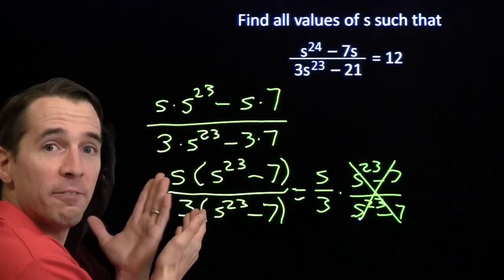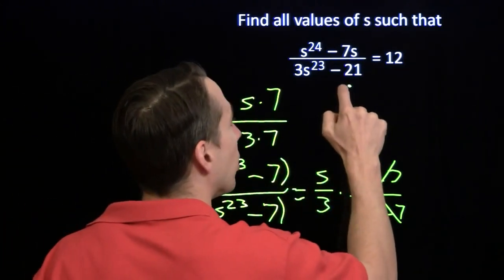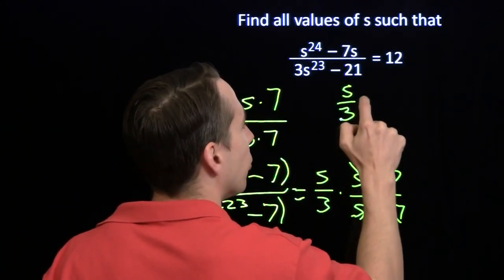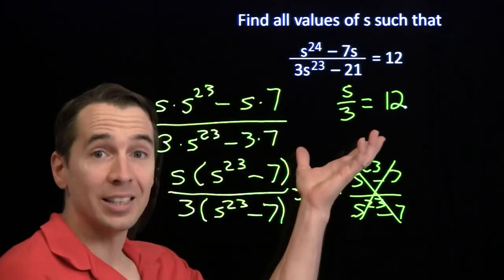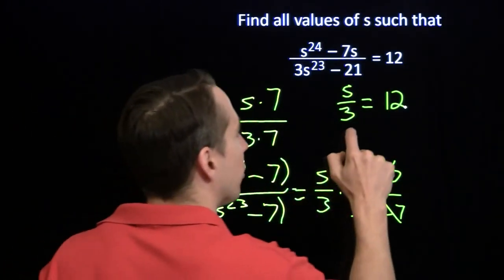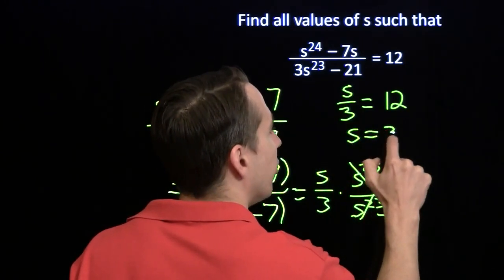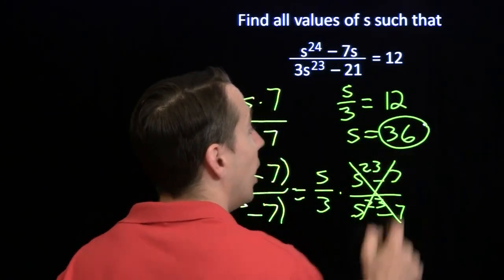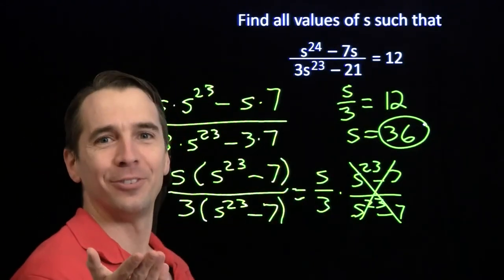And we found that by factoring. So now our equation is just s over 3 equals 12. That's a whole lot easier. What number do you divide by 3 to get 12? That's 36. So we just have s equals 36. And I'm going to let you check that one on your own. Have fun.